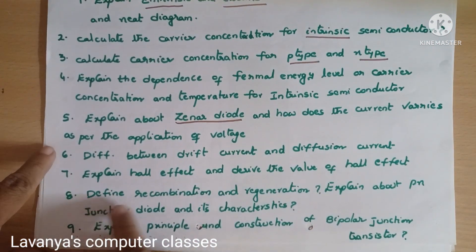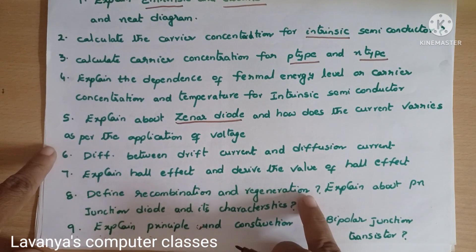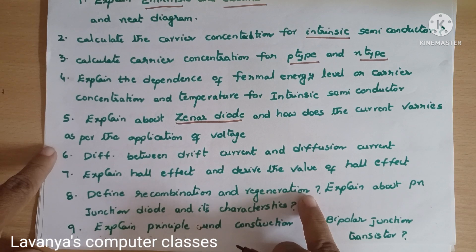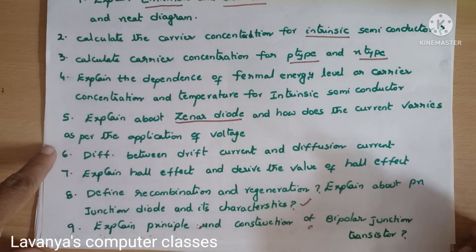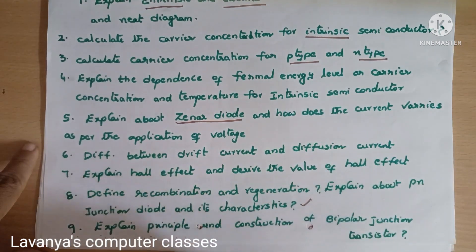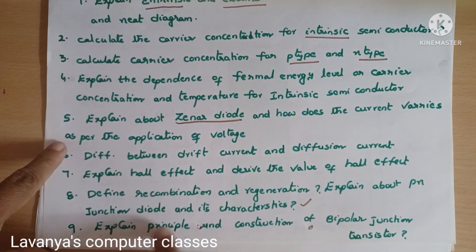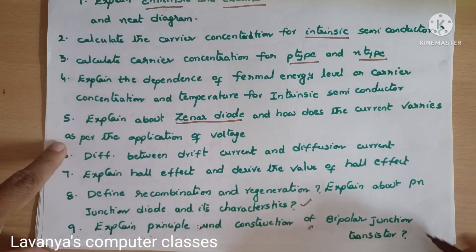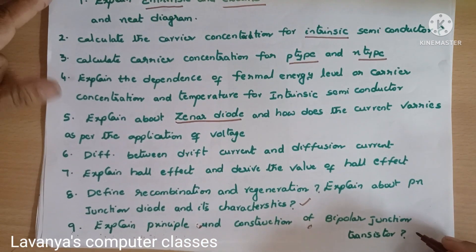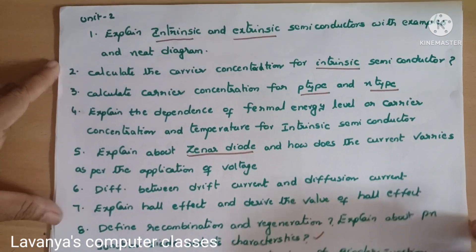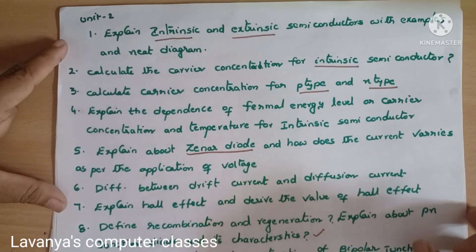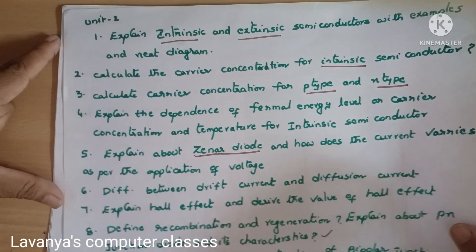Eighth question: define recombination and regeneration. Ninth: explain about p-n junction diode and its characteristics — this is an important question. Tenth: explain the principle and construction of a bipolar junction transistor. These are all the important questions in Unit 2.